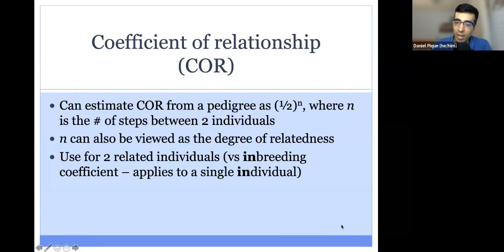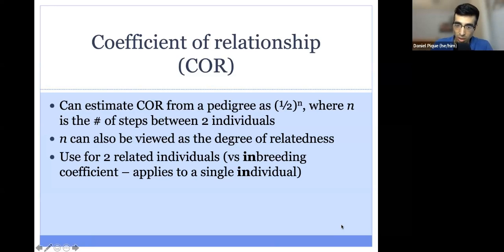The way to calculate the COR is one half to the power of n, where n is the number of steps between the two people whose relationship you are estimating. This can also be viewed as the degree of relatedness. The coefficient of relationship is used to estimate relatedness between two different individuals, in contrast with the inbreeding coefficient, which applies to a single individual.